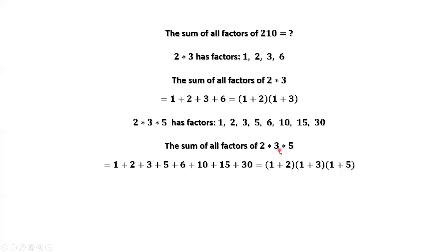2 times 3 times 5 is the prime factorization of 30. The sum of all factors of 30 equals the sum of all factors of the first factor, 2, times the sum of all factors of the second factor, 3, times the sum of all factors of 5.